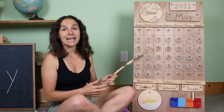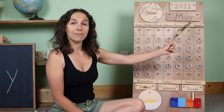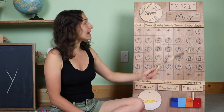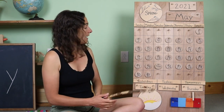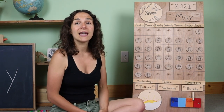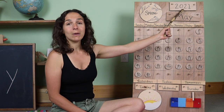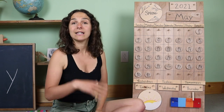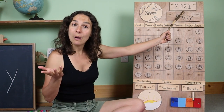First, let's go over the date. When we say the date, we begin with the month. The month is right up here — do you know what the month is? May. The month is May, and today is May 26th. Let's move the chip over from yesterday. Yesterday was May 25th, and today is May 26th. And right up here we have the year. There are two ways that you can say the year: you can say 2021, or you can also say 2021. Both ways are correct.